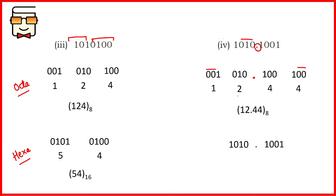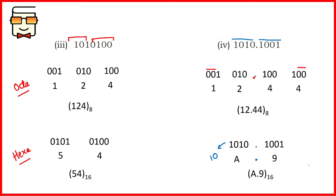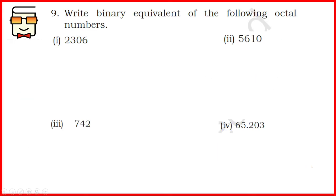Converting this binary number into hexadecimal, create groups of 4. Deal with the right and left of the point separately. To the right of the point create one group, and to the left create another group. No extra addition of zeros is required. The value to the left is 10, so write the alphabet capital A corresponding to it. The final answer is A.9 in hexadecimal. Coming to question number 9.